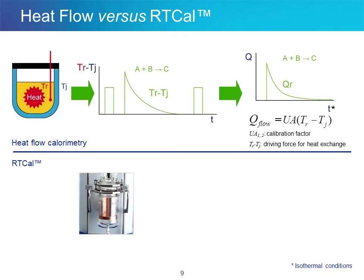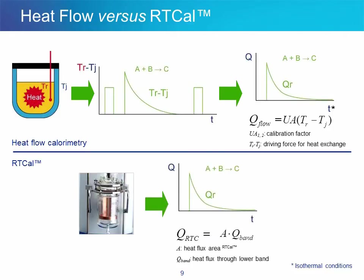Despite the great advantages of heat flow, it's not a process analytical technology because you cannot really walk away from the system — it requires human presence. On the other hand, RT-Cal does not require any calibration, so no need to wait until the final calibration to get all the data. Thanks to the vertical sensor, the heat exchange area is automatically determined without any operator input, so the whole process can be fully automated and left unattended.